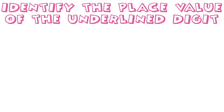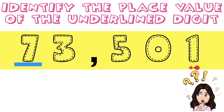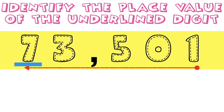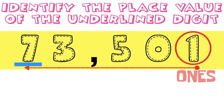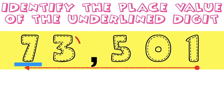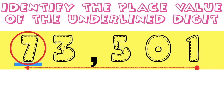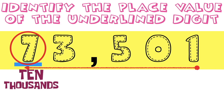Let's have our last example: 73,501. What is the place value of digit 7? Again, children, in identifying the place value, you are going to start from the rightmost digit going to the leftmost digit. Digit 1 is ones. Digit 0 is tens. Digit 5 is hundreds. Digit 3 is thousands. And digit 7 is ten thousands! Very good!